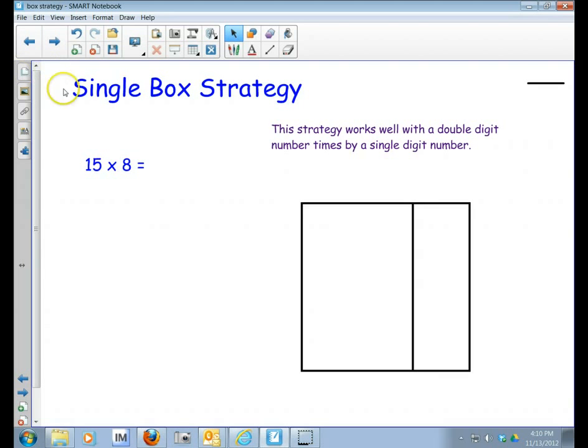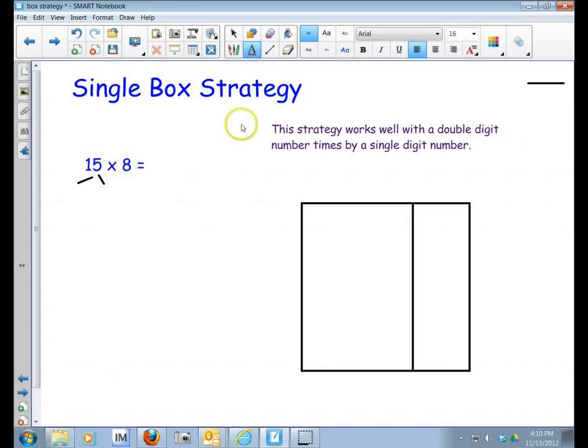So here we have the number 15 times 8 and if we're going to break the big number, the 15 into two smaller numbers, we would break it into the tens and ones. You could break it other ways, but I think that's the easiest way.